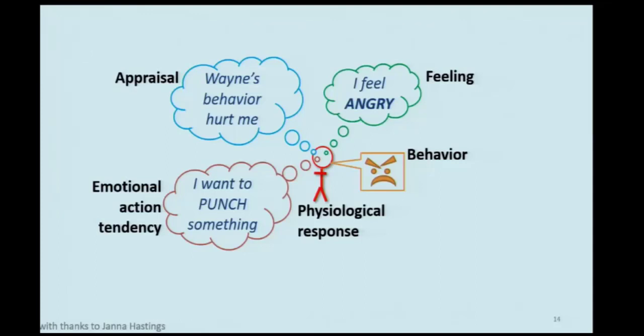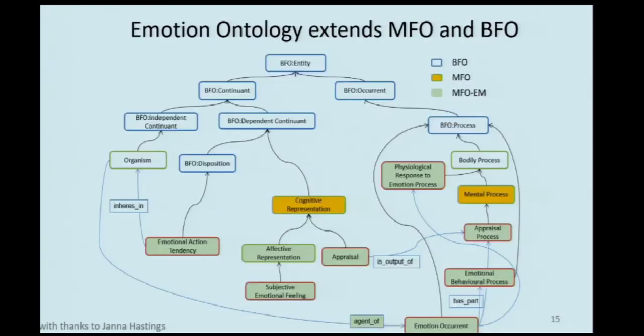Then there are football hooligans, which will play an important role in what follows. The individual being hit by Wayne appraises Wayne's behaviour, feels angry, and has a response — namely, he wants to punch Wayne. These are the main features of the emotional ontology. The emotional ontology extends the mental functioning ontology, which extends BFO.